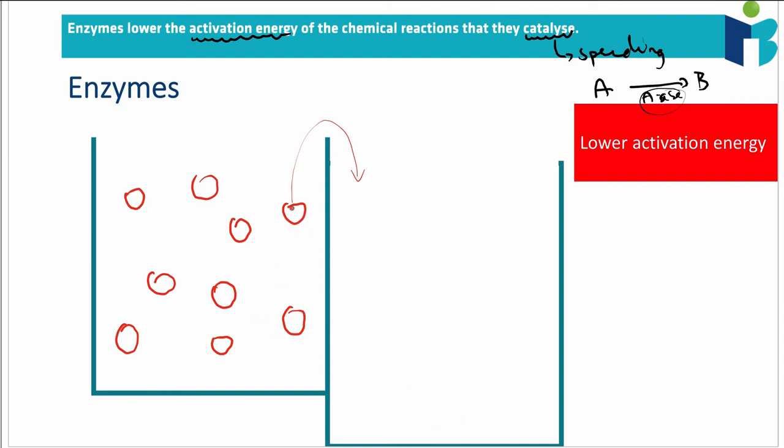Well, then only the bouncing balls that have enough energy to jump all the way over the wall can then land in this next beaker. Which means that that's kind of what's limiting how quickly these bouncing balls can get over the wall. The height of the wall.